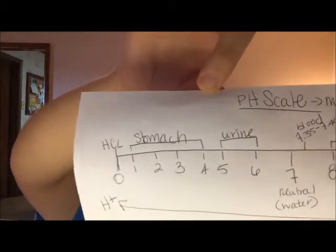Urine is on the acid side — it's five to six. The reason I need to know this is because I'm going to be doing lots of urinalysis. I need to know the normal pH of urine, as well as specific gravity and other things, but we're just talking about pH right now.